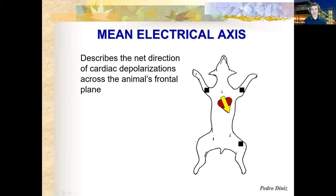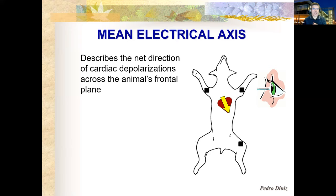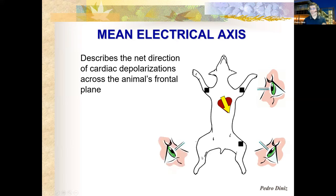If we look at the entire heart, the normal axis in humans is from the right shoulder to the left leg, or in dogs and cats it would be in the direction of the yellow arrow shown here. Think of each ECG lead as looking at the depolarization of the heart from a different angle — from the left shoulder versus the right shoulder, or from the left leg towards the right shoulder.